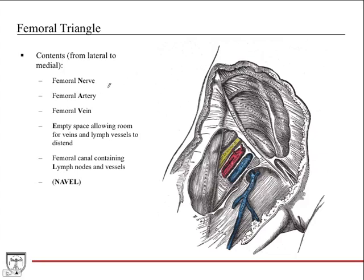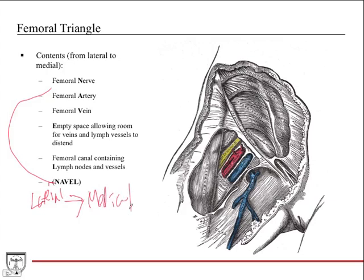The contents of the femoral triangle is a very common anatomy exam question that could also appear on a board exam. A common acronym to remember is NAVEL — it stands for Nerve, Artery, Vein, Empty space, and Lymph nodes. Remember that this is arranged lateral to medial.